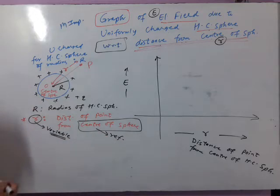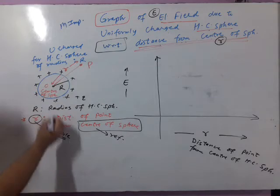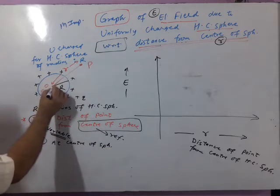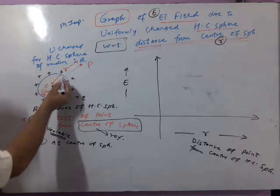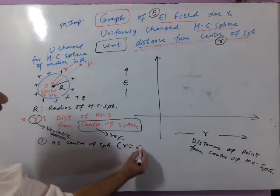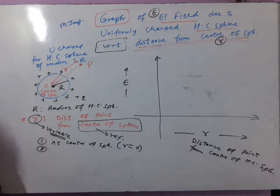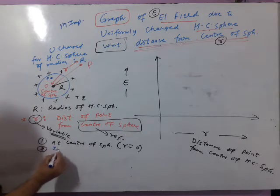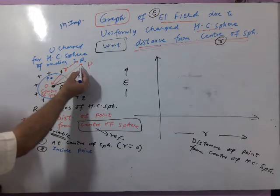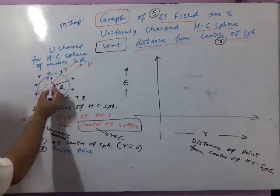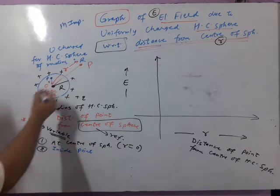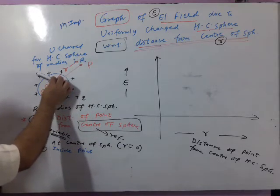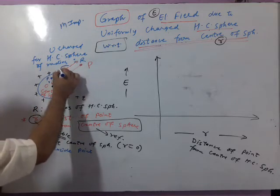Small r is a variable. At the center of the sphere, small r is 0. For any point inside the sphere, small r is less than capital R. On the surface, small r becomes equal to capital R. Outside the sphere, small r is greater than capital R. This variable can be 0, less than R, equal to R, or greater than R.